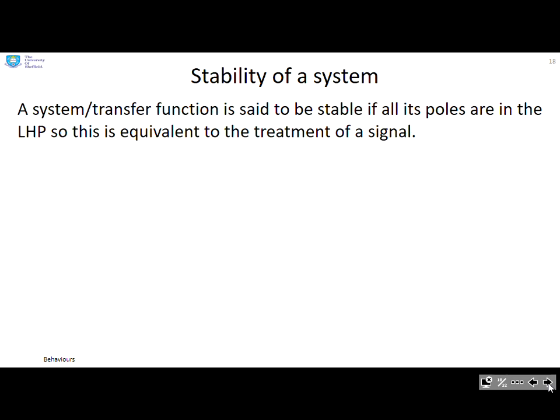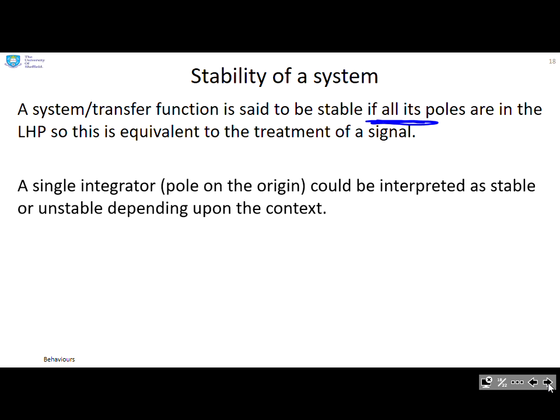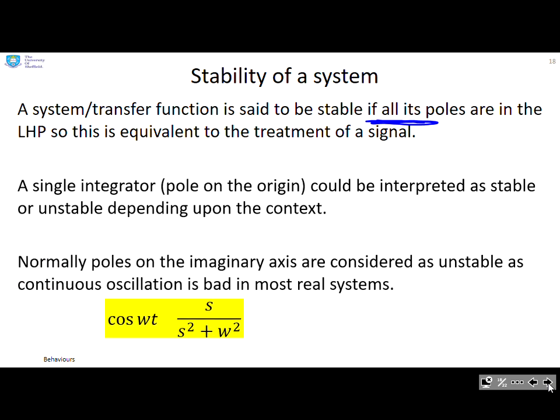What about stability of a system? A system transfer function is said to be stable if all its poles are in the left half plane. We need to emphasize here all of its poles have to be in the left half plane. A single integrator, that is a single pole on the origin, could be interpreted as stable or unstable depending upon the context. Normally, poles on the imaginary axis are considered as unstable as continuous oscillation, as you get from something like a cosine or a sine, is bad in most real systems. And here you'll see the poles are at plus or minus j omega, which is the imaginary axis.